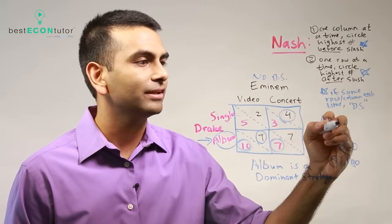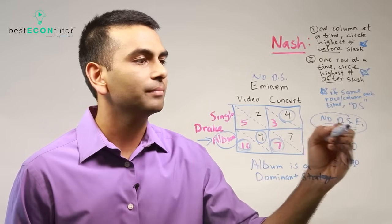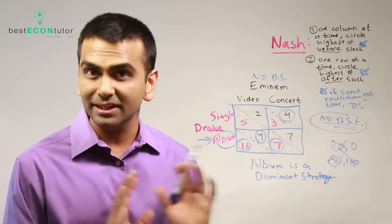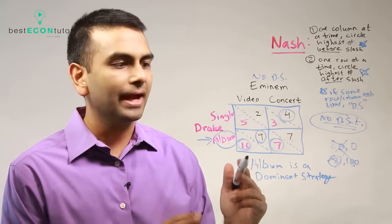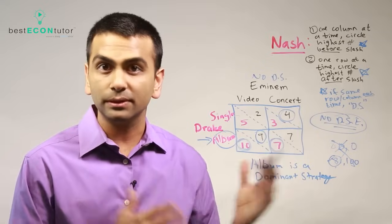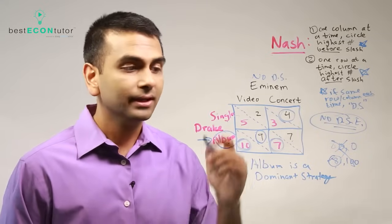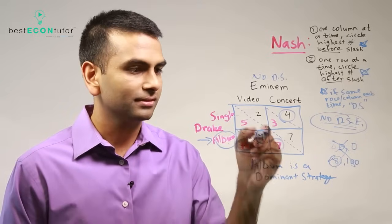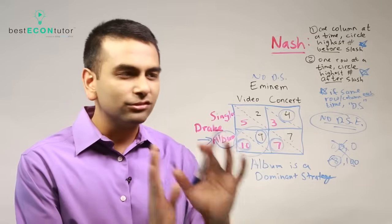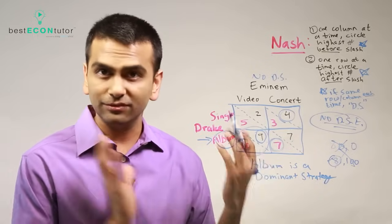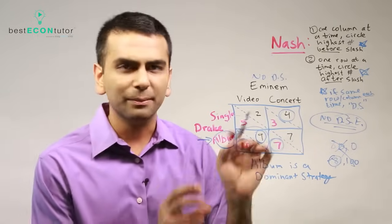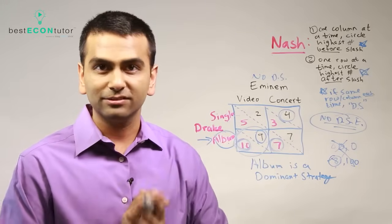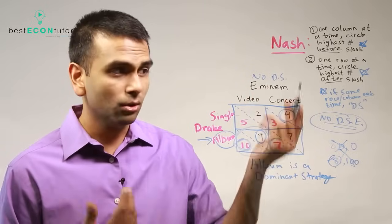So right off the bat there is no dominant strategy equilibrium. A DSE - dominant strategy equilibrium - is only there if both players have a dominant strategy. Even if one of them doesn't have a dominant strategy, there's no DSE. But setting the DSE aside, what's the Nash equilibrium? Even if we don't have a dominant strategy equilibrium, we could still have a Nash equilibrium. The Nash equilibrium is, once you're done doing all the circling, any cell out of the four that has both numbers circled is a Nash equilibrium. You'll also know if there are dominant strategies and whether there's a DSE.